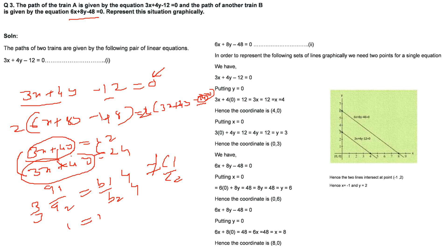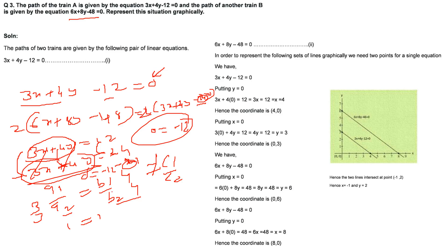If we try to subtract the two equations, the X and Y terms cancel and we get 0 = −12, which is undefined. This confirms there is no intersection point. The ratio test A1/A2 = B1/B2 ≠ C1/C2 is a quick algebraic check: when these conditions hold, the lines are parallel and there is no solution. To plot, find intercepts for each equation separately and draw two parallel lines.